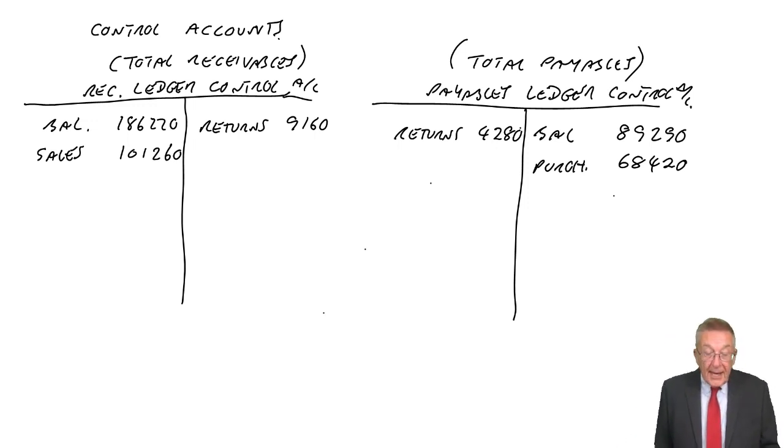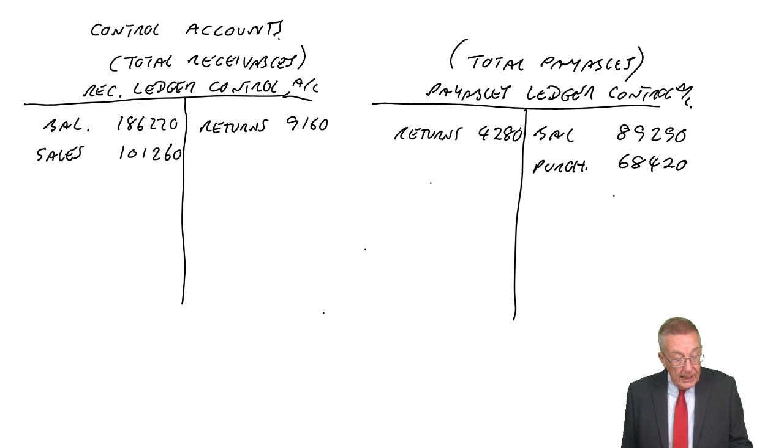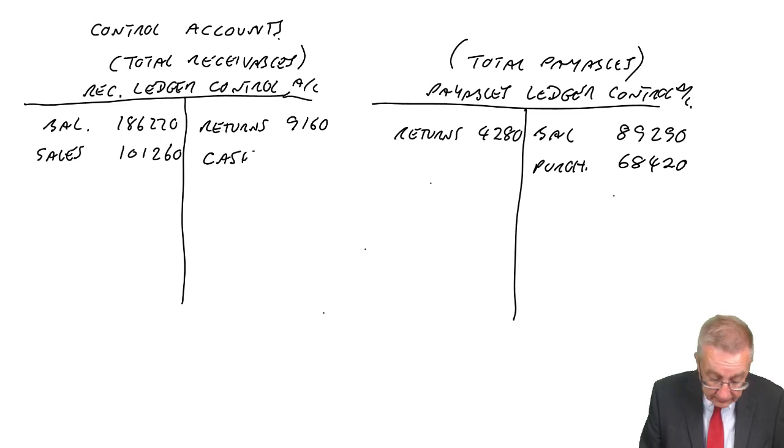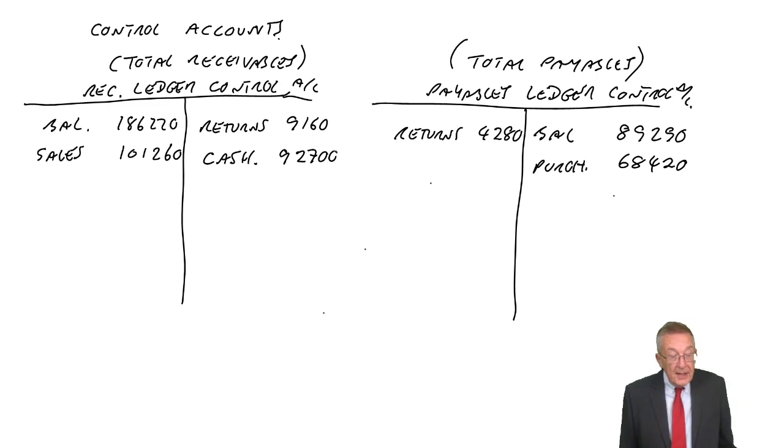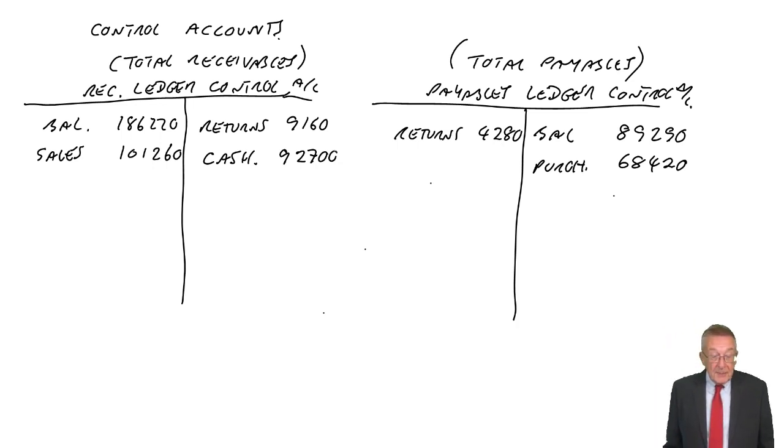Next one, cash received from customers. Presumably this is credit customers. What's the double entry? Debit cash, credit receivables at 92,700. Be careful there. Here I've no choice but to assume that this is cash received from credit customers. If I had been told separately that we've made some cash sales, remember cash sales don't affect receivables at all. Because cash sales, debit cash credit sales, receivables would not be affected.